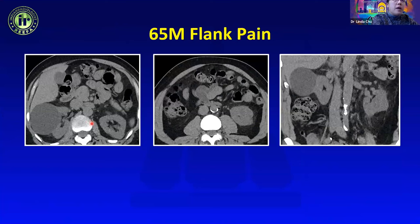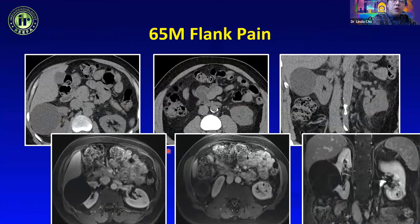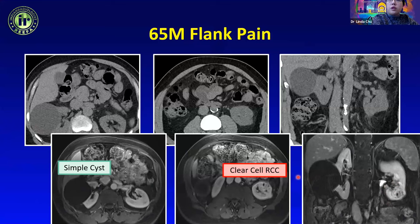A man presenting with flank pain had a low-density cystic lesion in the right kidney, but in the left kidney there was a subtle lesion almost the same attenuation as the background kidney — visible on coronal images as a contour deformity. On MRI, the right renal lesion did not enhance confirming a simple cyst, while the left renal lesion showed heterogeneous enhancement and proved to be renal cell carcinoma.